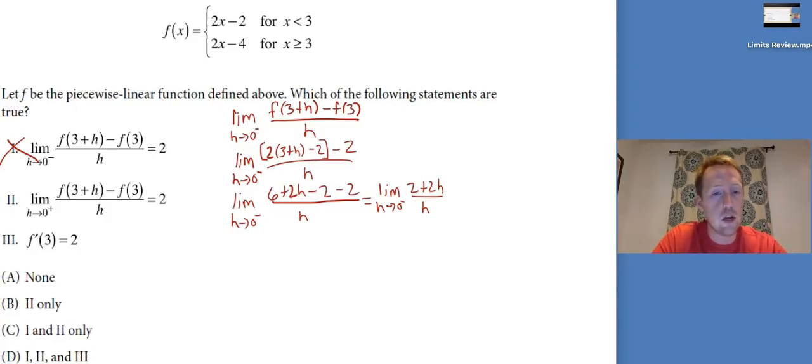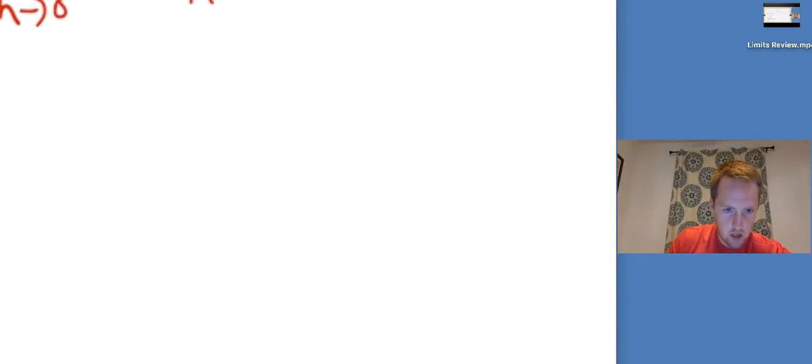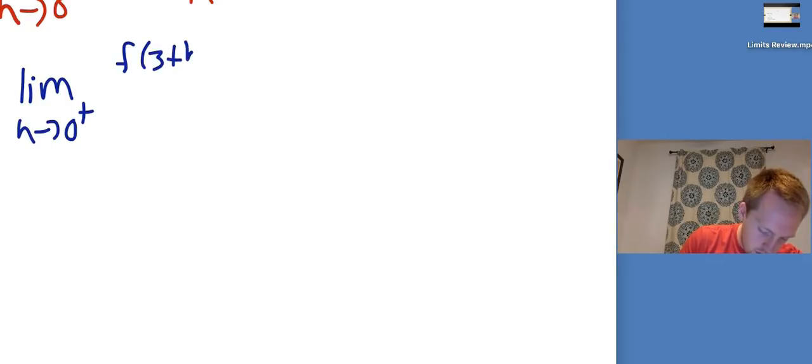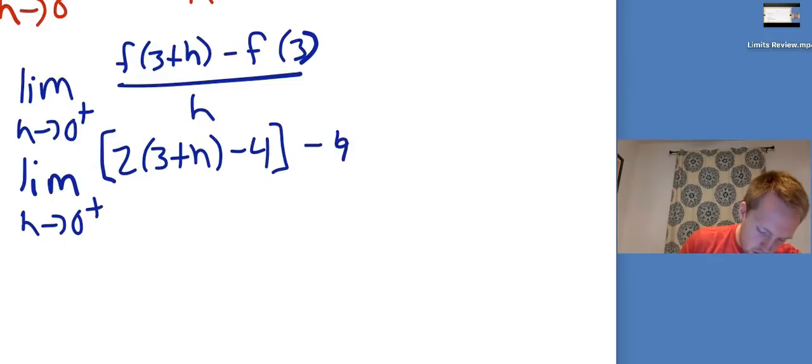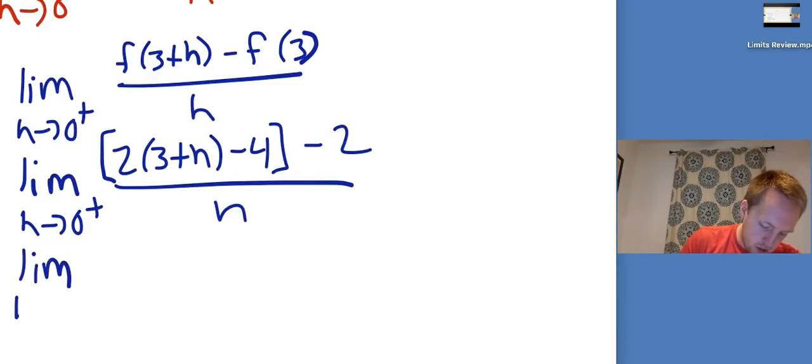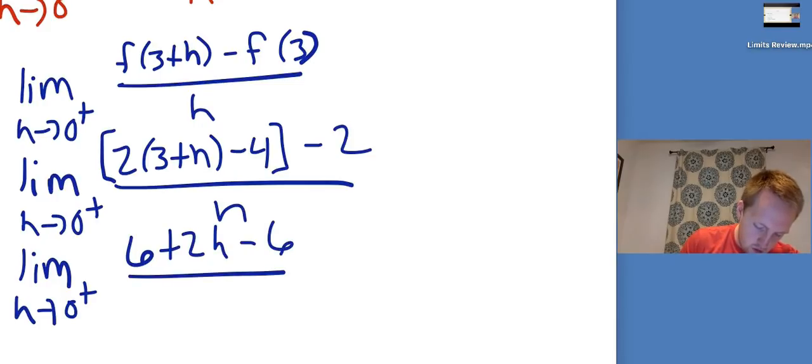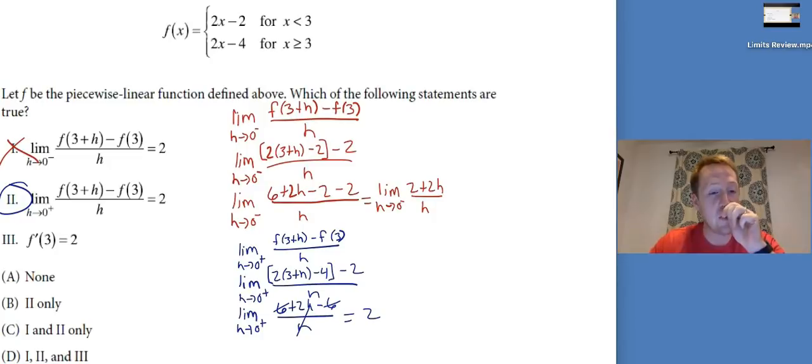So we're going to do the limit as H goes to 0 from the right of the same thing. The only thing that's going to change here is instead of using the 2X minus 2, we're going to use the 2X minus 4. So again, I'm going to zoom in. So I've got a nice big amount of space. The limit as H goes to 0 from the right for F of 3 plus H minus F of 3 over H. So that's going to be the limit as H goes to 0 from the right of 2, 3 plus H minus 4 minus 2. Because that was what F of 3 was minus 2 over H. So that's the limit as H goes to 0 from the right for 6 plus 2H minus 6 over H. Well, look, the 6s cancel, which leaves us with the Hs to cancel. So that is 2. Statement 2 is good.